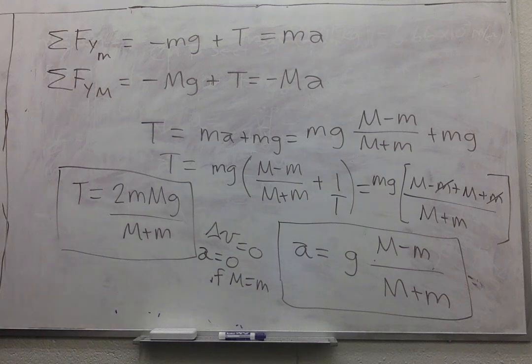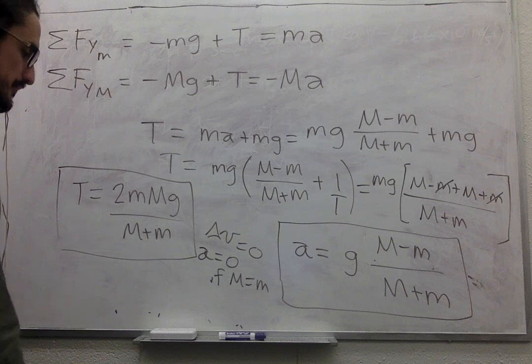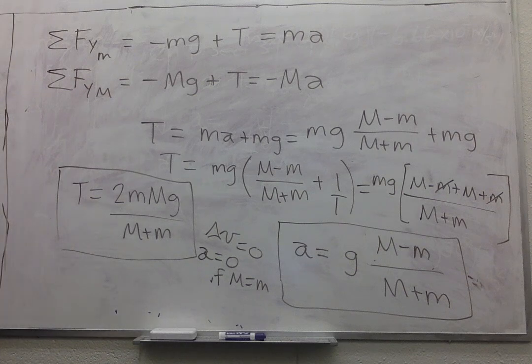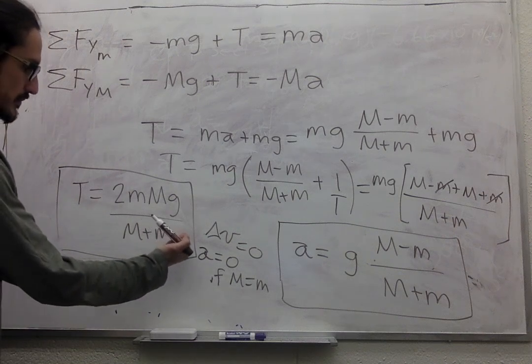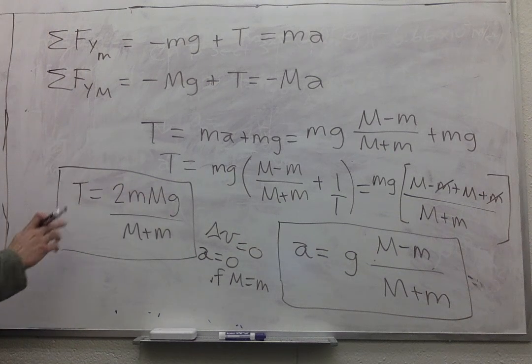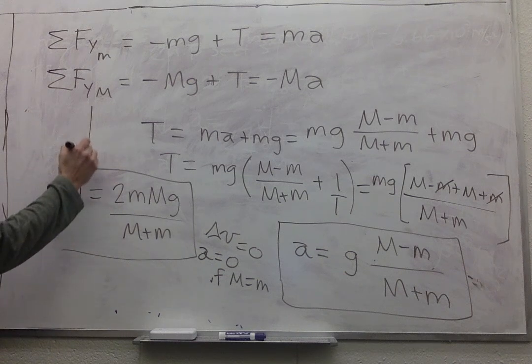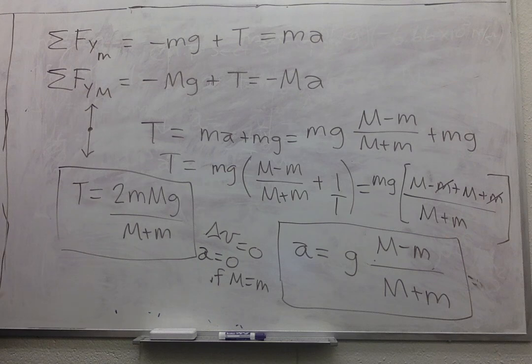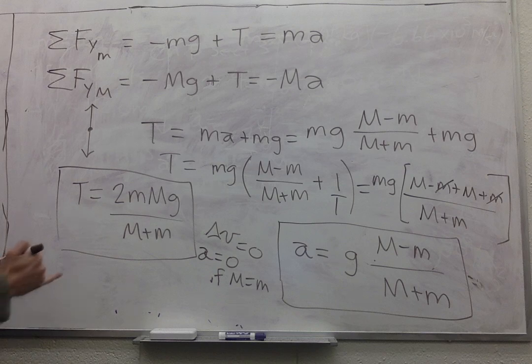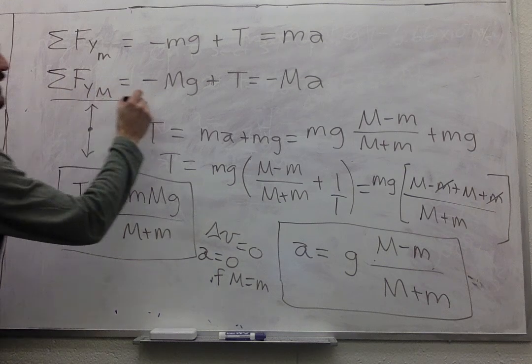And figure out what happens physically. Well, you have your free body diagram, let's say for capital M, and this is how we write it mathematically.